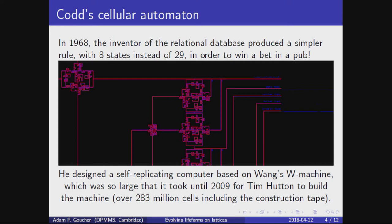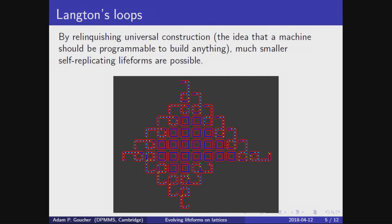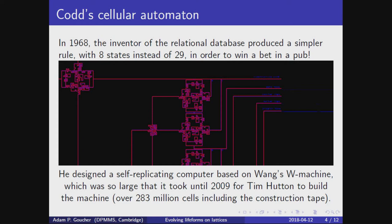Let's return to Codd's eight-state rule. Forty years later, Tim Hutton finally built a machine proposed by Codd in his 1968 paper. And it's huge. Tim estimates that even in the super-fast program Golly, which has clever algorithms, it would take a thousand years for this machine to copy itself. Evolution, of course, would take inconceivably longer still.